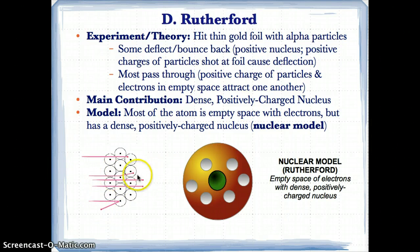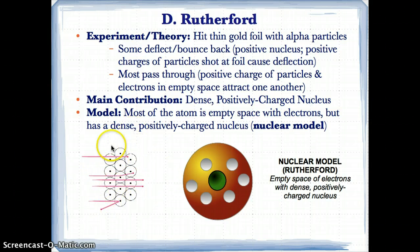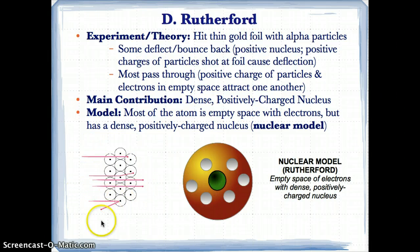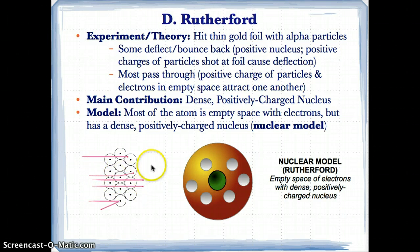However, most of the alpha particles passed through because the positive alpha particles were attracted to the negatively charged electrons in the empty space of the atom. If the alpha particle hit the empty space containing negative electrons, it would be attracted and pass straight through. Only when hitting the positive nucleus would it deflect, because positive and positive repel.